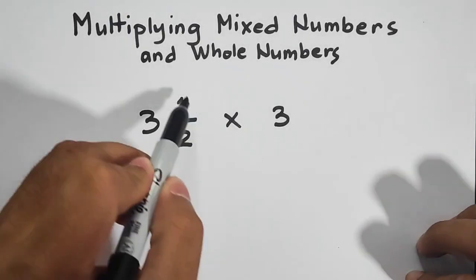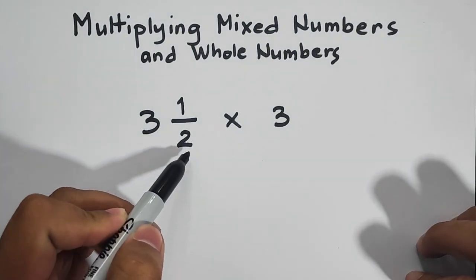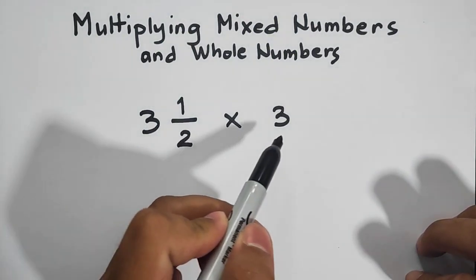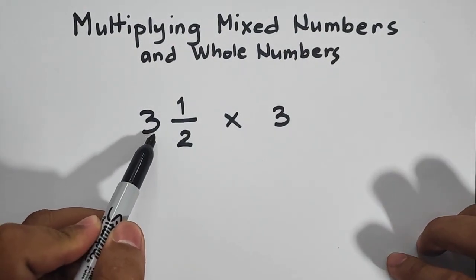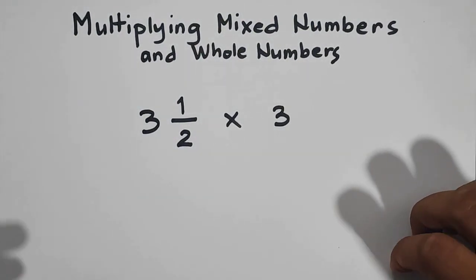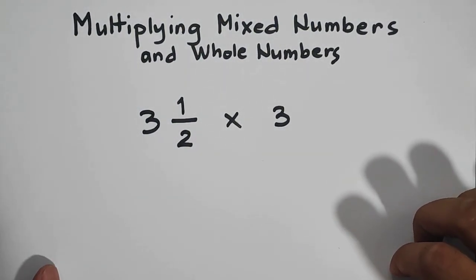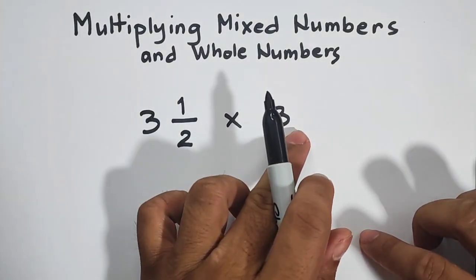So we have here this given mixed number to be multiplied by a whole number. We have here 3 and 1 half times 3, your whole number. So the question here is that how are we going to multiply this mixed number by the whole number?